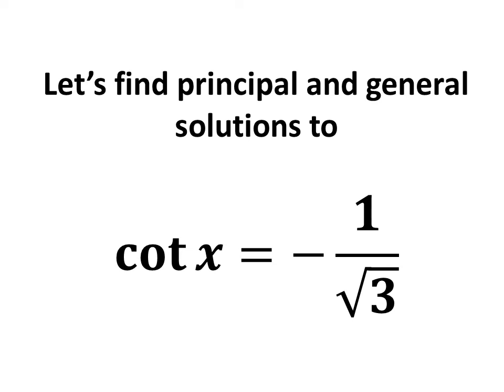In this video, we will learn to find the principal and general solutions to the equation cotangent of x is equal to minus 1 upon square root of 3.